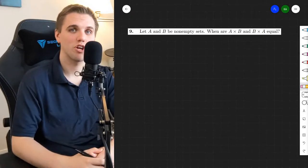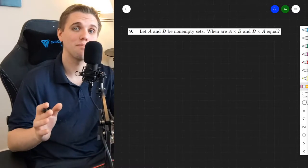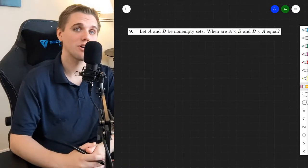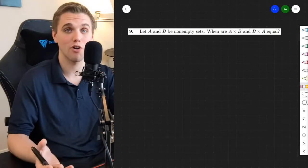Hey everyone, in this lecture we're going to be solving problem number nine in section 1.3 of your free applied discrete math textbook. Specifically, we're going to be determining when A cross B equals B cross A.